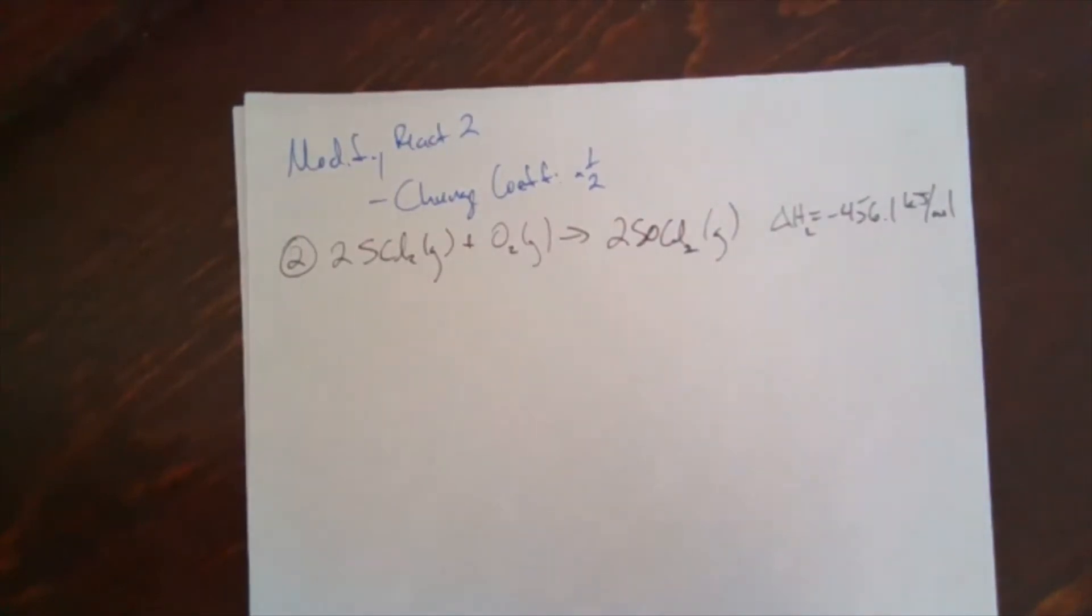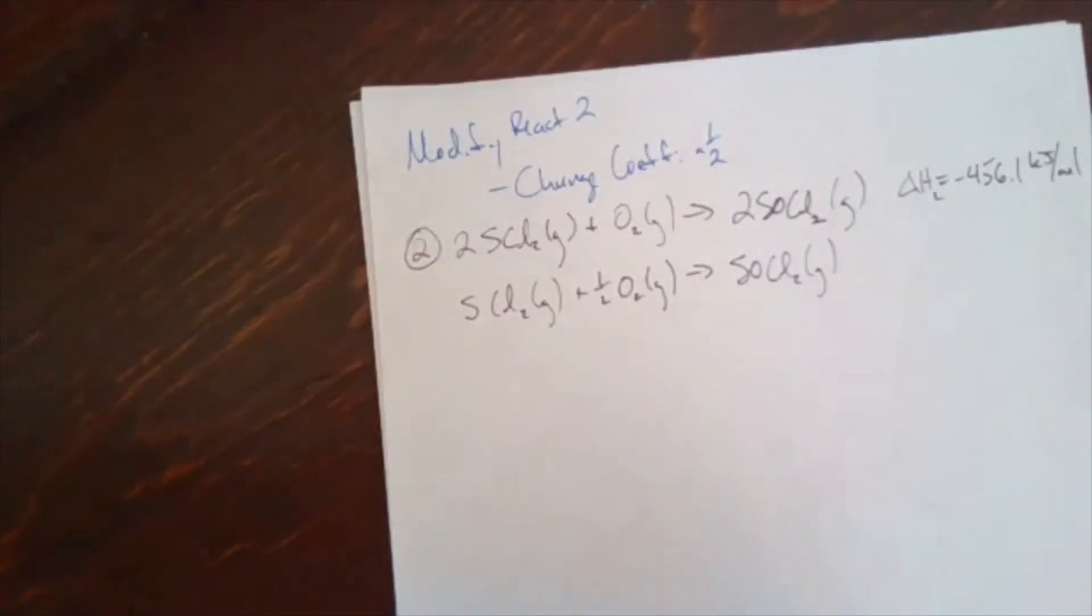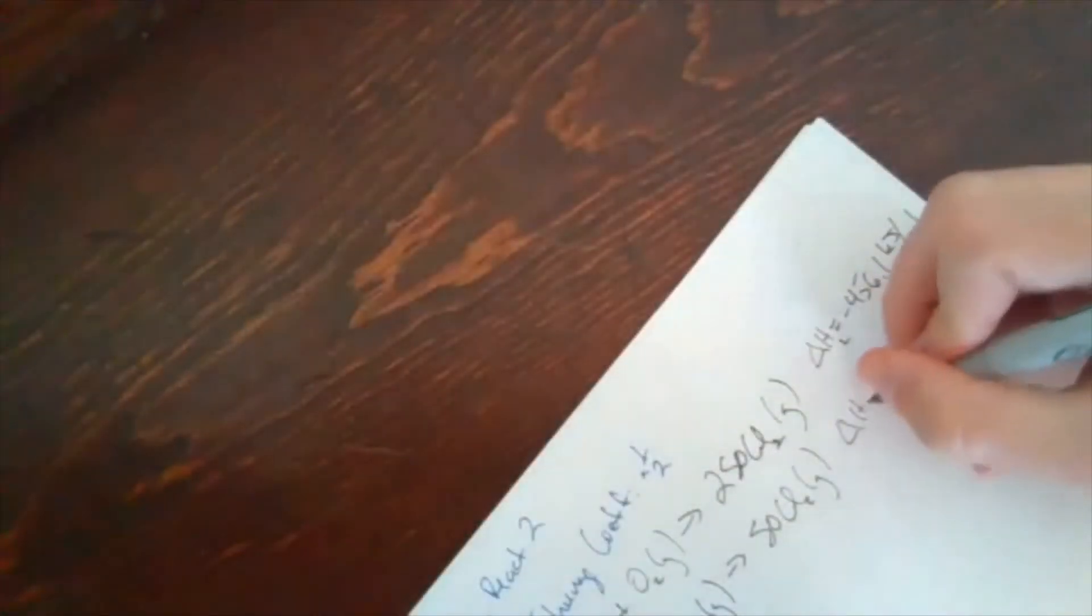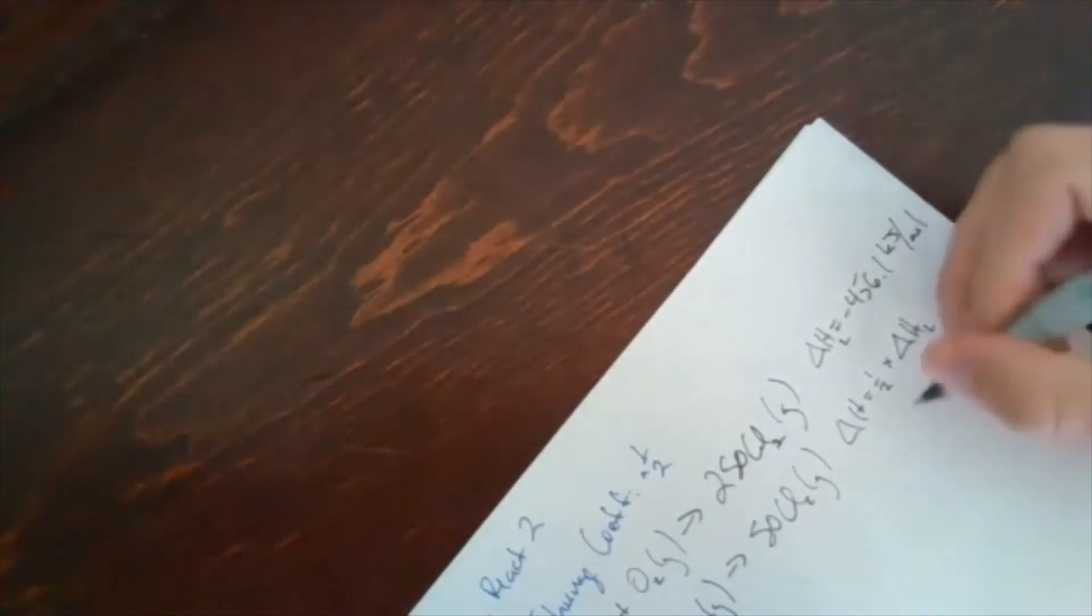And so what I'm going to do is I'm just going to multiply all the coefficients by one half. So I get SCl2 gas plus one half O2 gas becomes SOCl2 gas. And delta H on this is just going to be one half, no negative this time, because I'm not changing, I didn't change the direction. So one half times negative 456.1 kilojoules per mole, which is equal to negative 228.1 kilojoules per mole.